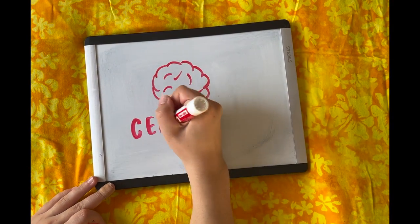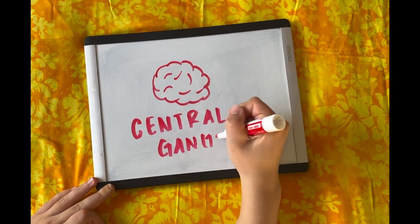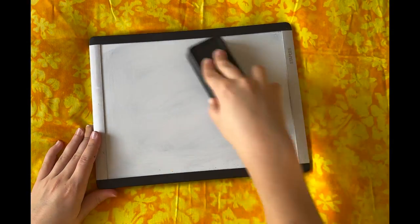Bryozoans also have a central ganglion ring in their nervous system and are regarded as plants.